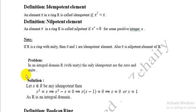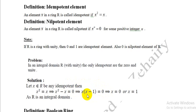To solve this problem, let x belong to R be any idempotent element, so x satisfies x² = x. Adding the additive inverse of x to both sides gives x² − x = 0. Using the distributive law, we get x(x − 1) = 0. Since R is an integral domain it has no zero divisors, so either x = 0 or x = 1. Thus the only idempotent elements in an integral domain are 0 and 1.